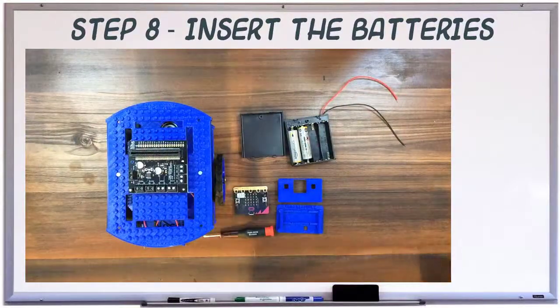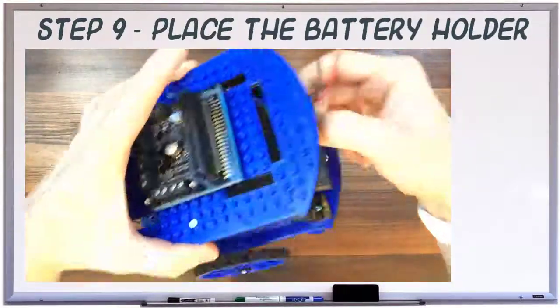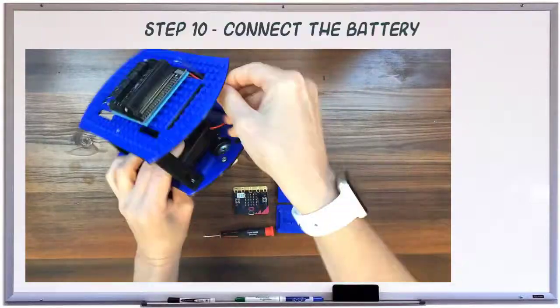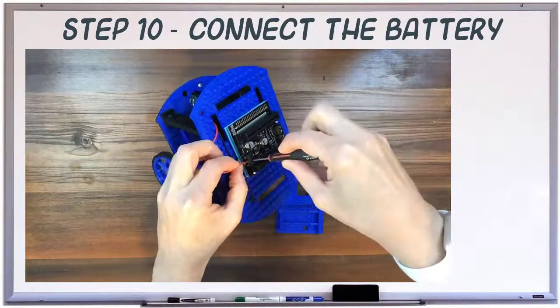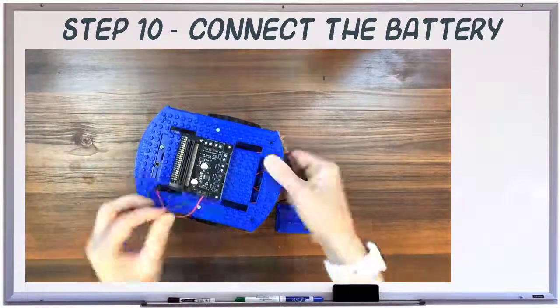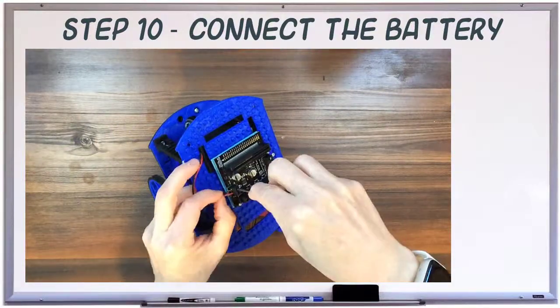Open the battery holder and insert the batteries. Place the battery holder on the first layer of the robot. Run the battery wires up through the slot on the same side as the motor board power terminals. Plug red into positive and black into negative, and screw them down.